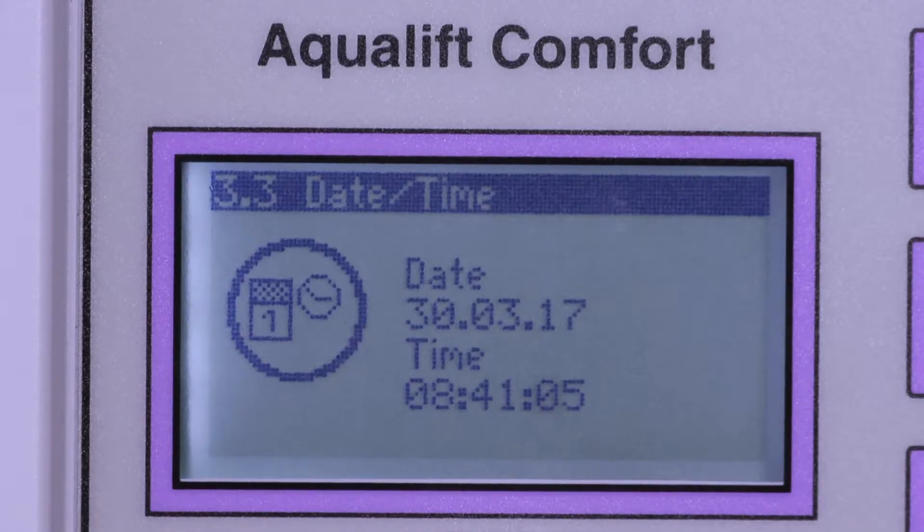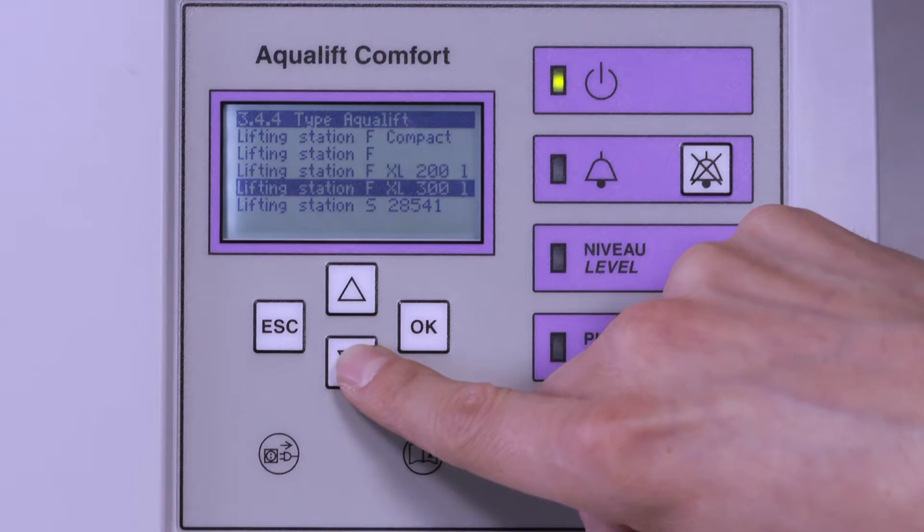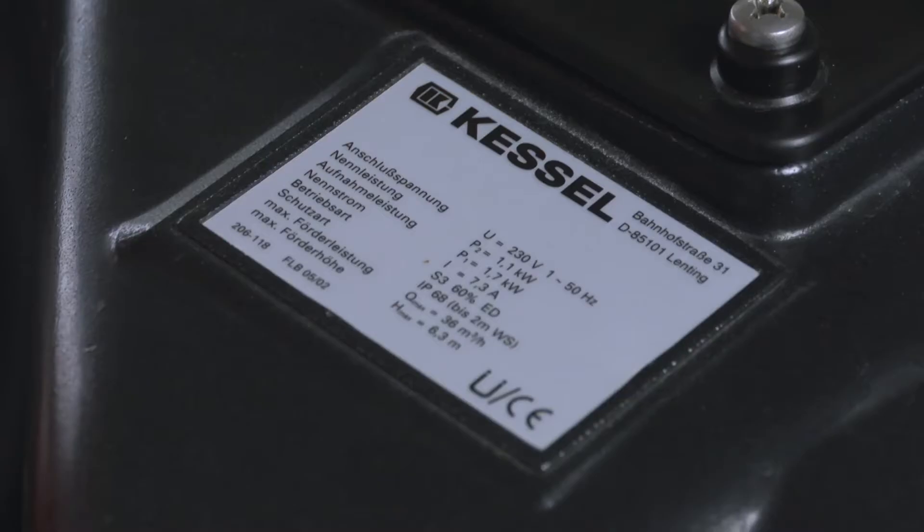You can also set the date, time and type of system using the same procedure. The system type is located on the type plate of the system.